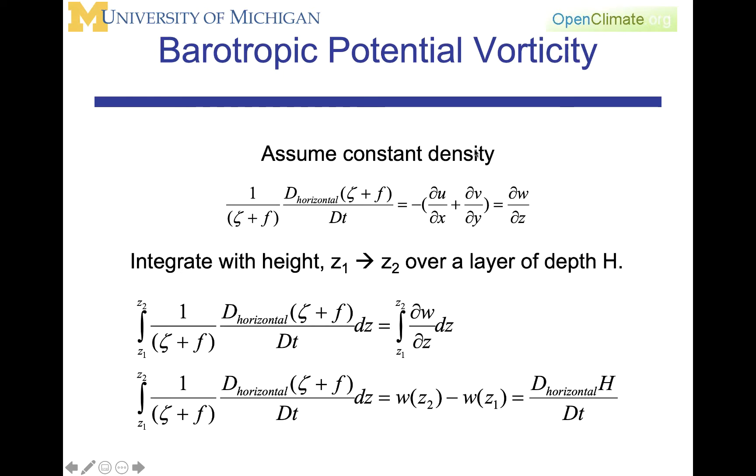What we're going to do is assume constant density. When we assume constant density in the height coordinate system, then we will have that the horizontal divergence can be replaced by essentially the vertical divergence, dw/dz.